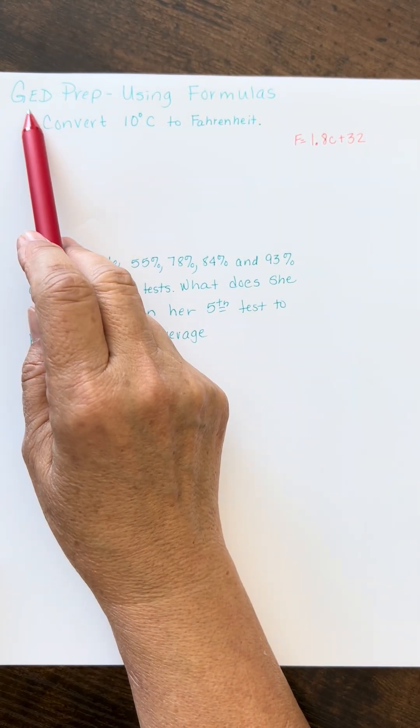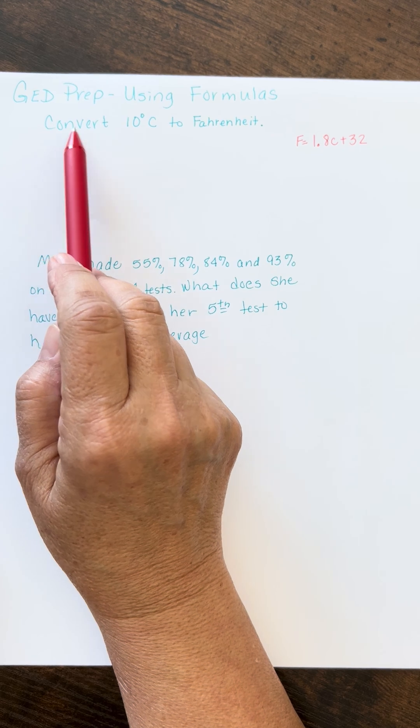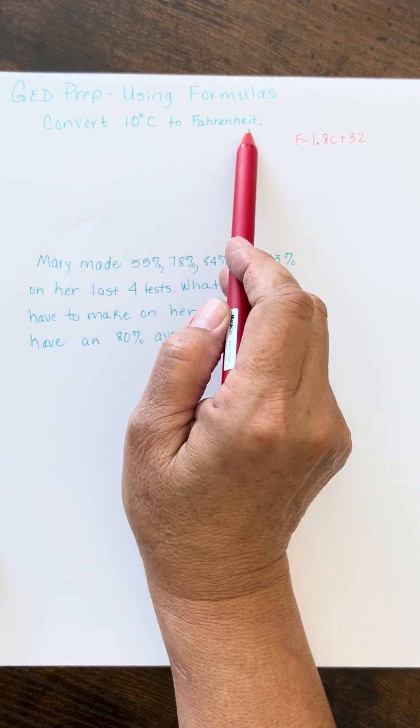Okay, let's look at a couple of GED prep problems. The first one asks us to convert 10 degrees Celsius to Fahrenheit.